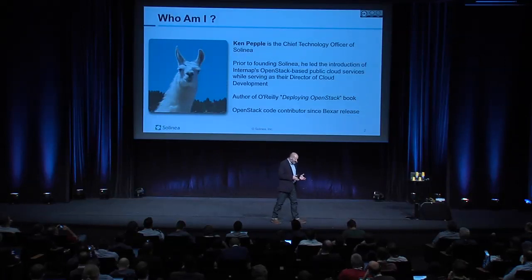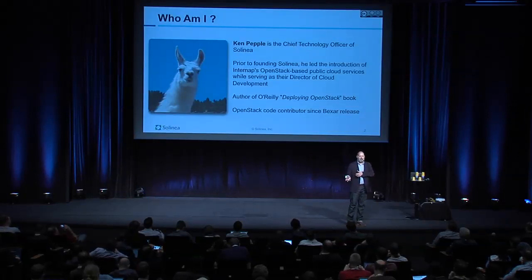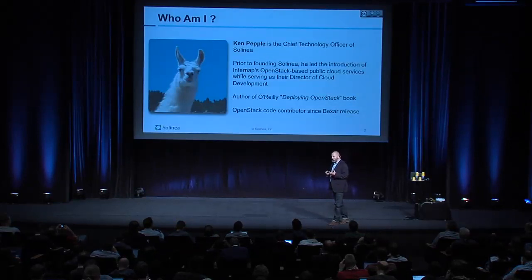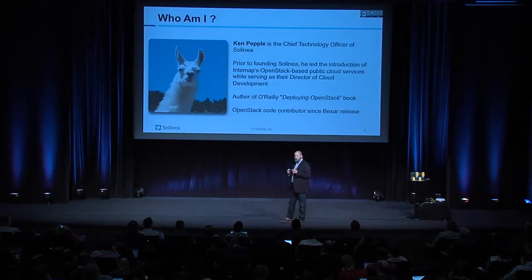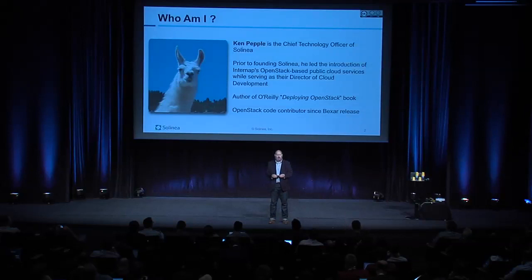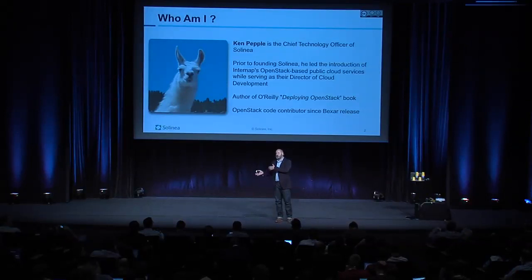My name is Ken Peppel. I'm CTO for Selenia, a consulting and development company that helps people go to the cloud, and specifically OpenStack clouds. I've been involved in the community since the Bear release, and I'm one of the few people who are both actually a code contributor — I wrote flavors, if you ever swear at flavors because it's not very flexible, I wrote that a very long time ago. But I've also run a large production cloud. At InternApp, one of the first public clouds available, I ran development and operations for about a year and a half. So I've seen both the code creation side as well as the actual pain of operating an OpenStack cloud, especially two or three years ago when things were perhaps not as robust.